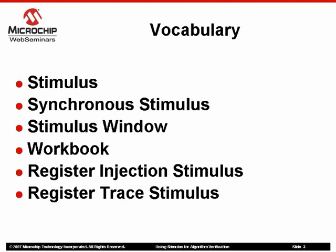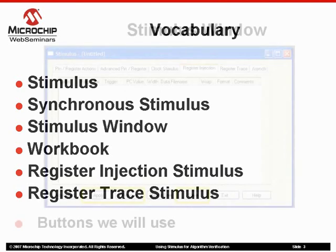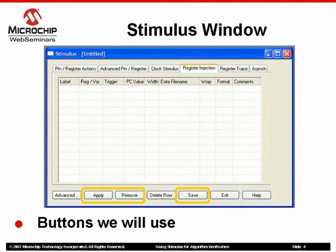Register injection stimulus is the attaching of a data file to an SFR or GPR register so that data can be injected into the application. Register trace stimulus is the attaching of a data file to an SFR or GPR register so that data can be traced out of the application. Here is a screenshot of the stimulus window where all stimulus is defined. The buttons to activate and deactivate synchronous stimulus are Apply and Remove, and the Save button allows you to save the stimulus setup for future use.